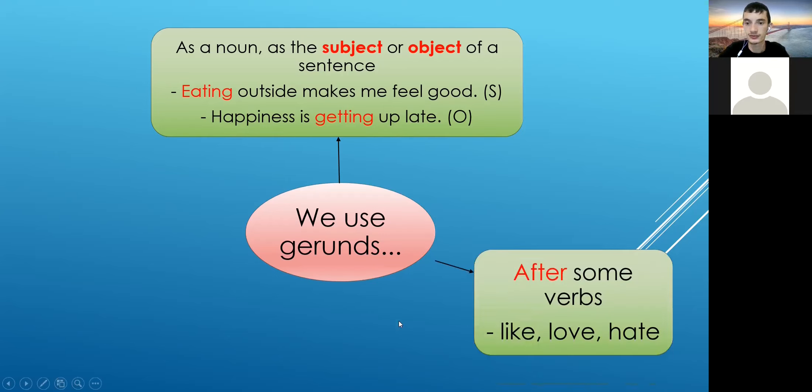Next one. After some words, like love. What does it mean? We use the gerund after some words. Okay, can you give me an example? Start your sentence with I. I love, or I like. Open your mic. I like swimming.